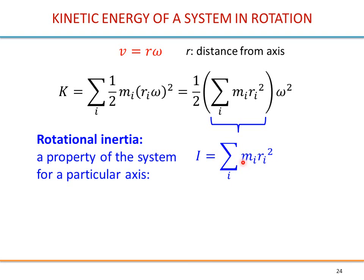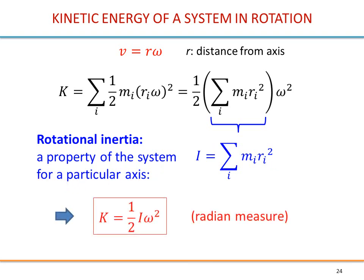This sum contains the mass and the distance of each particle — we define this as the rotational inertia of our system, denoted I. It is a constant, because the masses are constant and their distances do not change — so it is a property of the system for a particular axis. We can write the kinetic energy as half of I omega squared. Remember to keep SI units so omega must be in radians. The hint to remember this: linear KE is half Mv squared where M is inertia; for rotation I is inertia and omega is the velocity. So it's half of inertia multiplied by velocity squared in both cases.